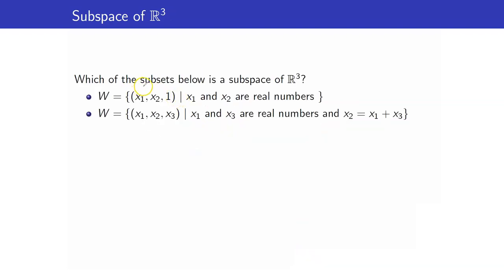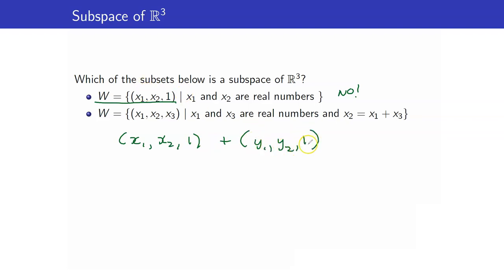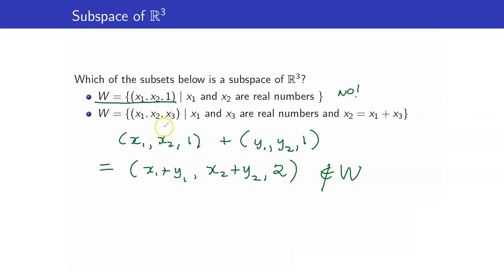Which of the subsets below is a subspace of R3? Consider the first one: ordered triples where the last coordinate is always equal to 1. Is it closed under vector addition? The answer is no. If I take (x1, x2, 1) and add it to (y1, y2, 1), I get (x1+y1, x2+y2, 2). The third coordinate is 2, not 1, so this sum is not in W. These two elements are in W but their sum is not.